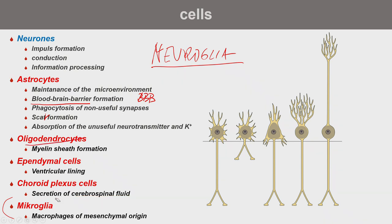Oligodendrocytes form myelin sheaths of neurons, creating the unique cable structure useful for saltatory spread of action potentials. The remaining two cell types — ependymal cells and choroid plexus cells — are related, as choroid plexus cells are derivatives of ependymal cells. They line the inner surface of the ventricular system and are able to produce cerebrospinal fluid.